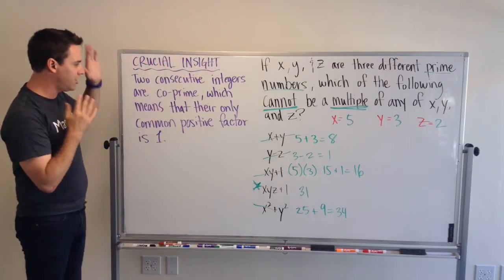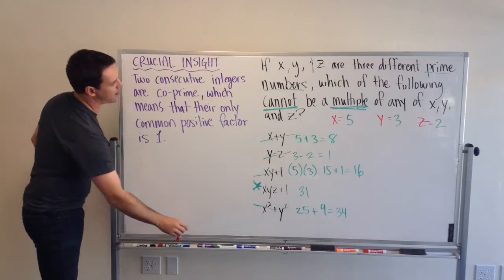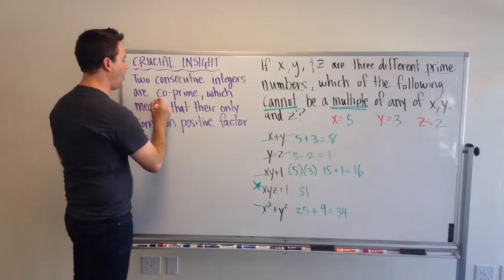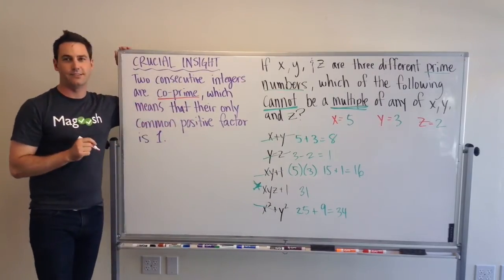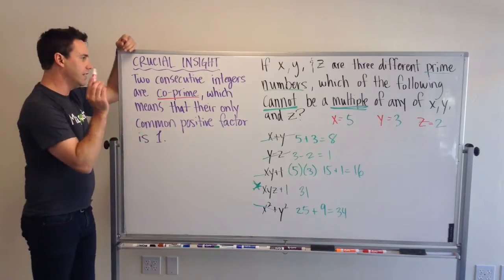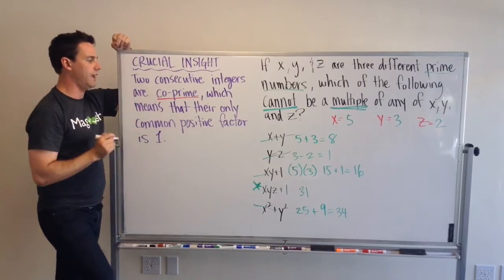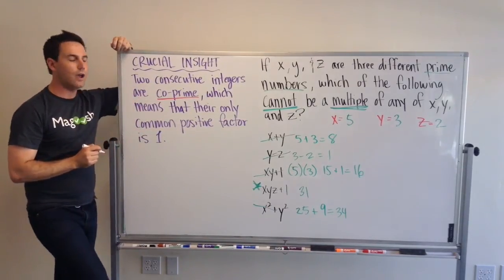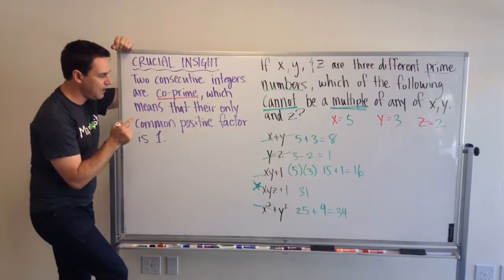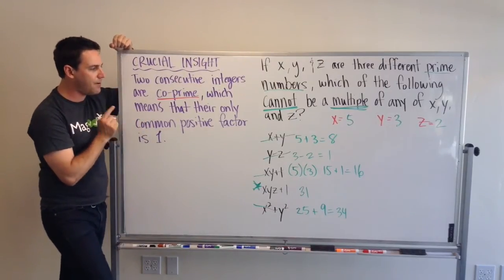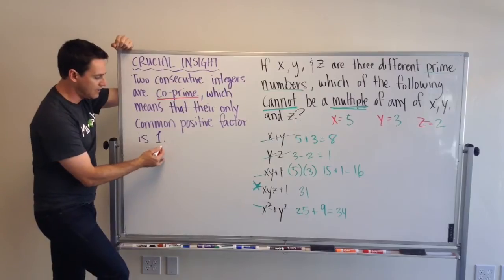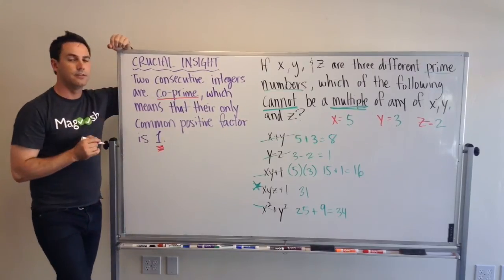And, one thing that you should know, now walking away from this video, is what a co-prime is, and what that means. So, here's the crucial insight. Two consecutive integers are co-prime. Which means that their only common positive factor is 1.